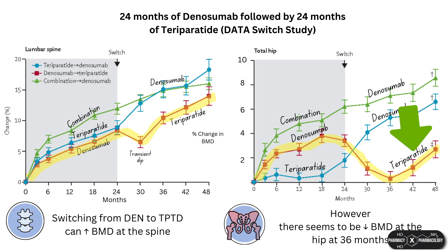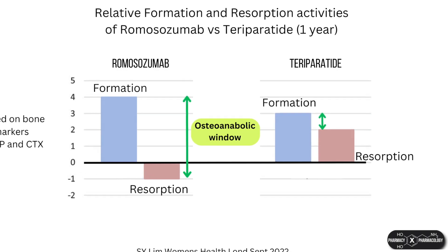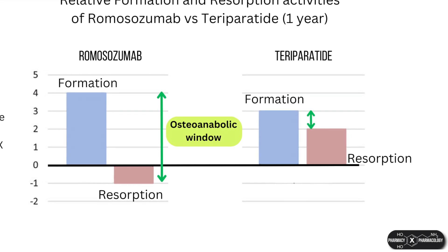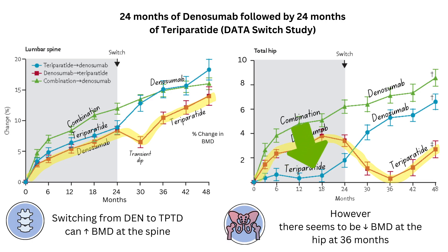The hip BMD dip seems to have partially recovered by 48 months. Note that this data is only for two years of denosumab followed by two years of teriparatide, and the patient number is quite small. Based on this, the general recommendation is to avoid the denosumab-to-teriparatide transition, or at least use with caution. It is thought this occurs because teriparatide also has resorptive activity alongside its anabolic activity, and the net anti-resorptive effect may not be completely counteracted initially. Studies show teriparatide tends to be more effective on longer courses, which may explain the transient dip.